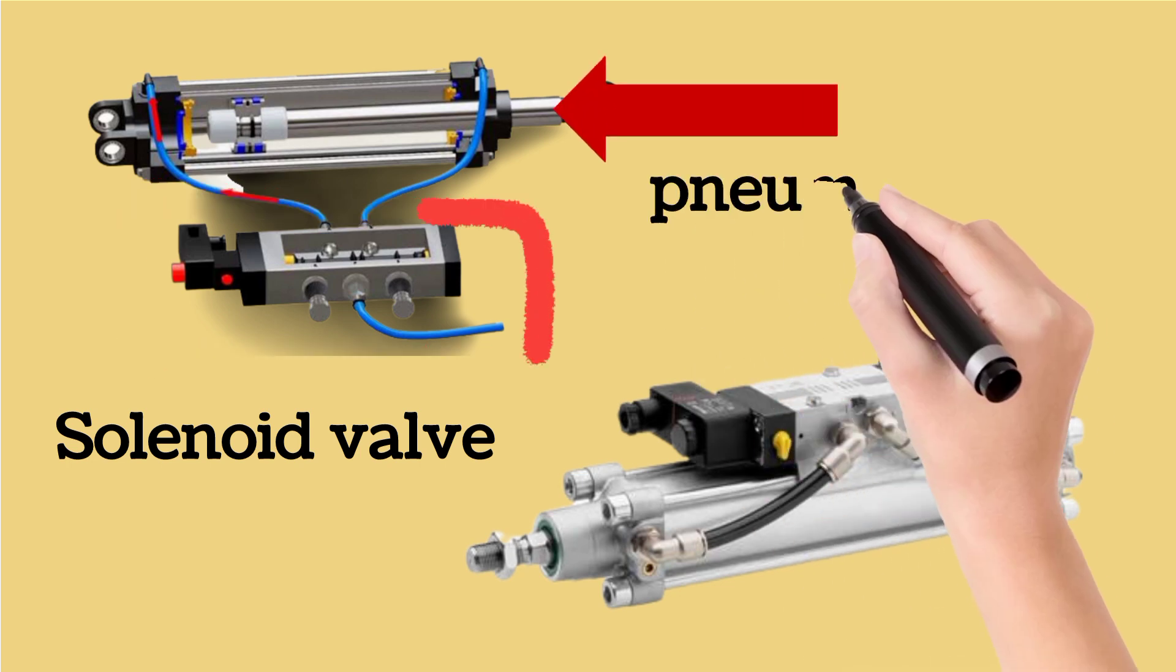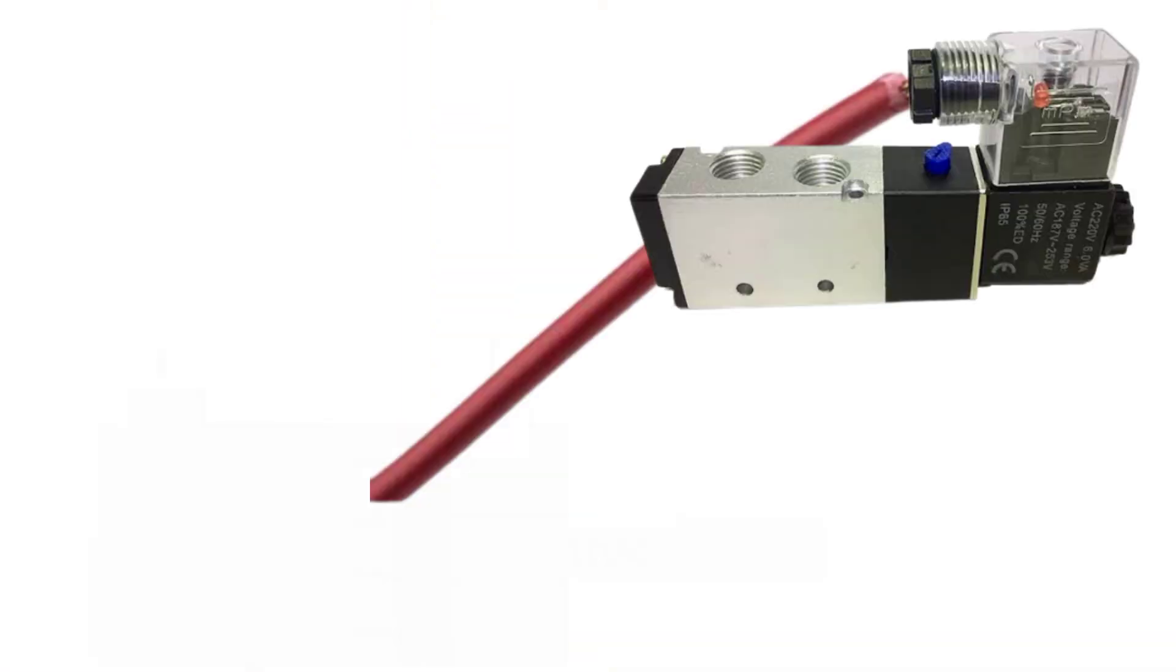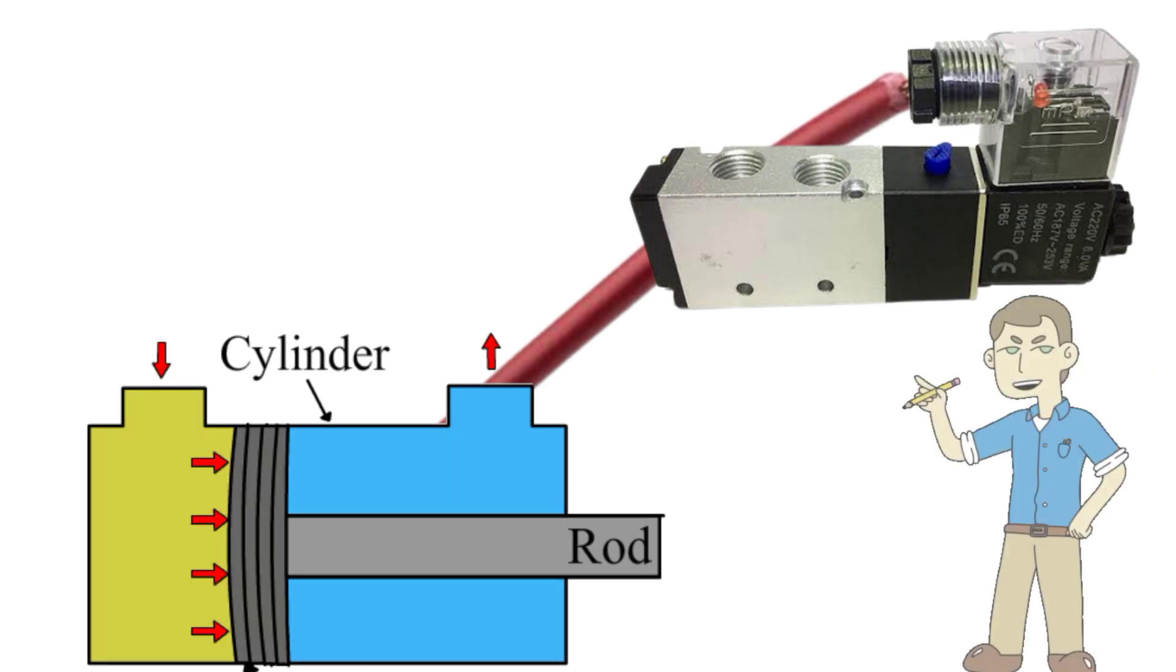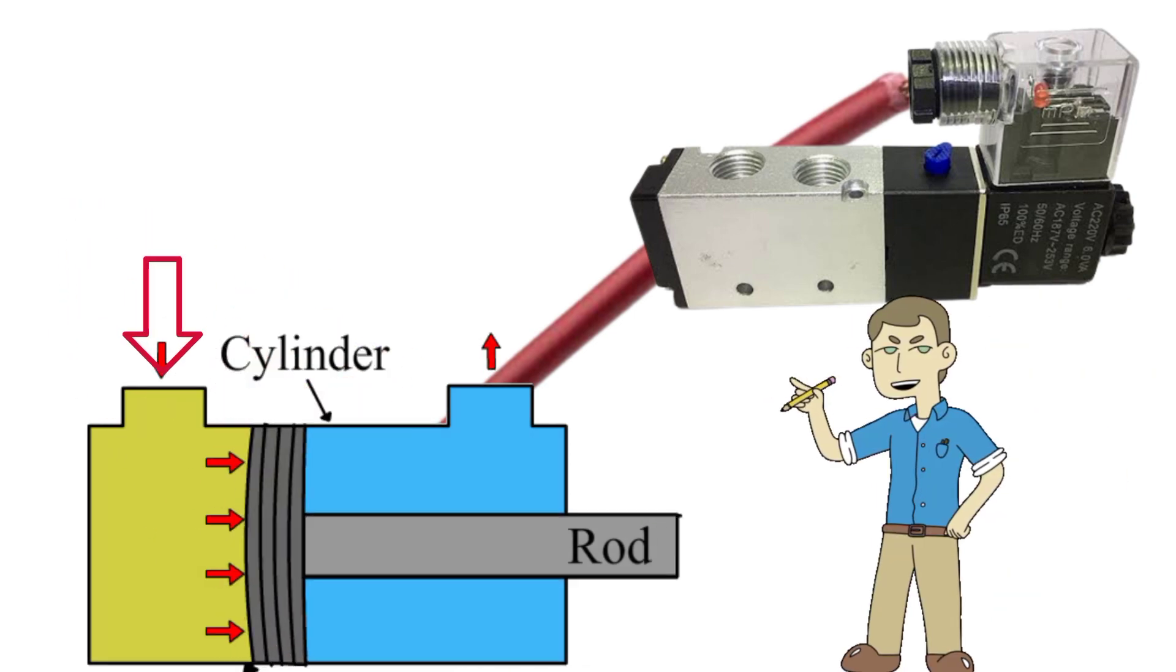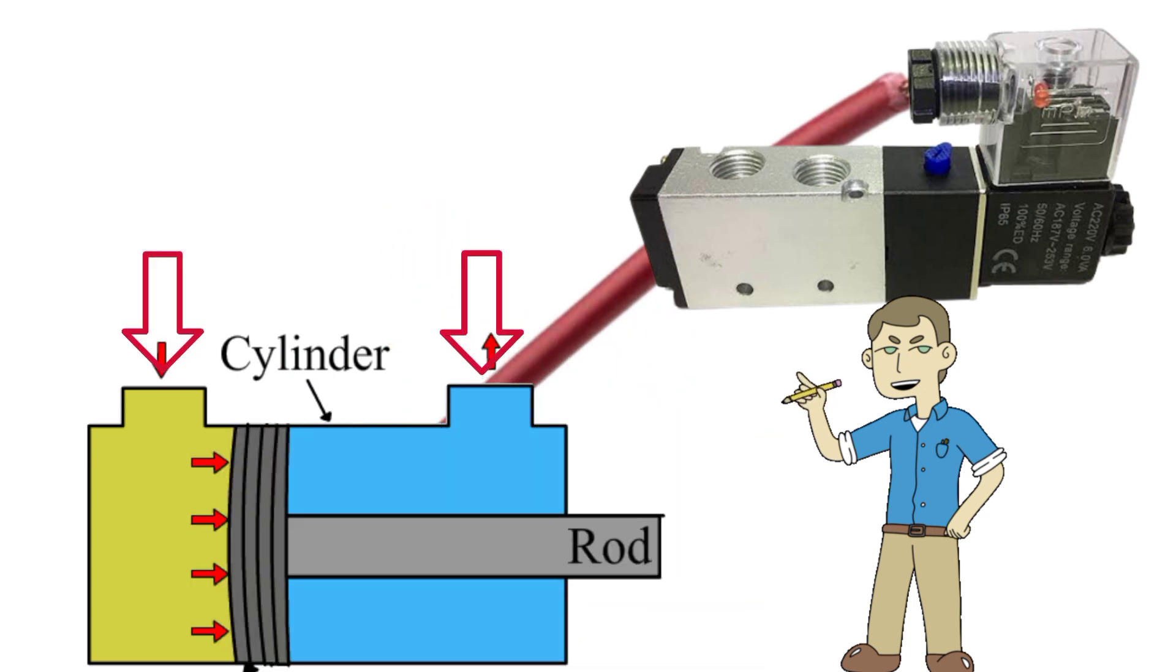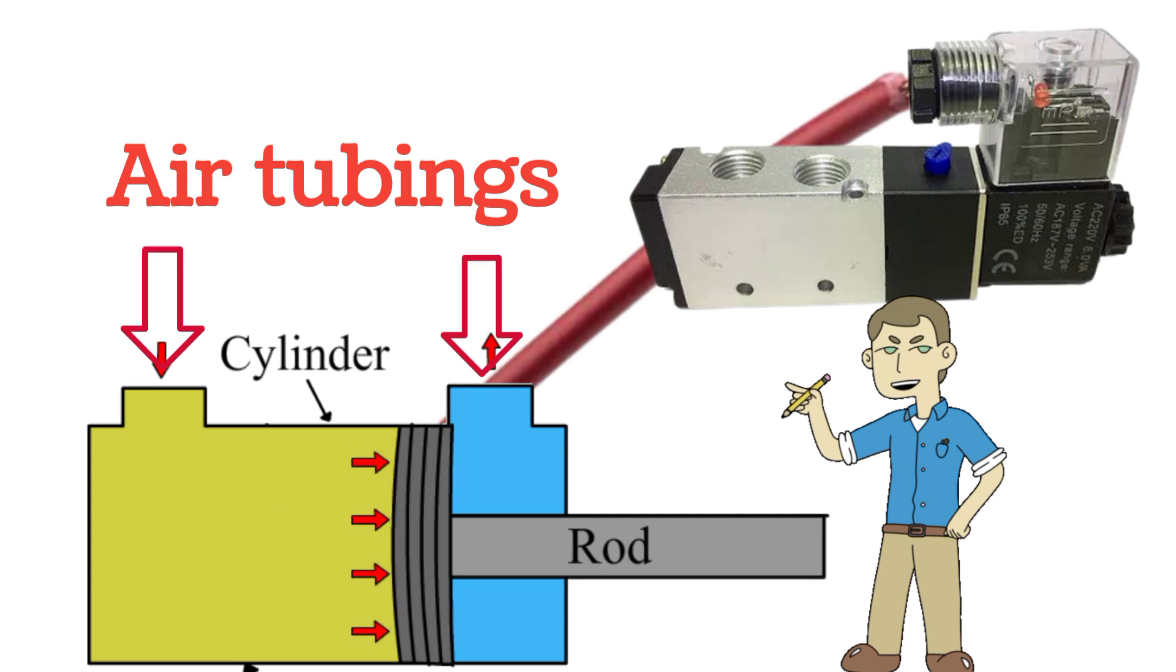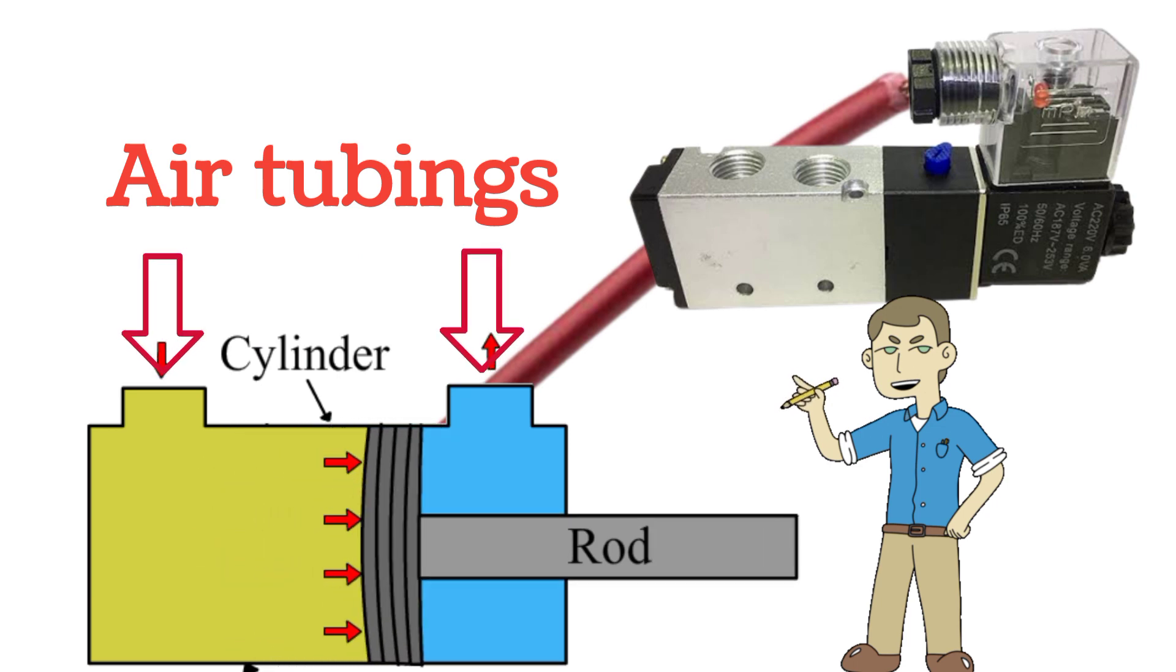Now I will explain how pneumatic cylinder is operated by solenoid valve. In the image, pneumatic cylinder is shown operated. The arrows are shown on the left side and right side of pneumatic cylinder. These are the air tubings for pneumatic cylinder. Air tubings are connected at the output ports of solenoid valve. Output ports are shown by the circle.